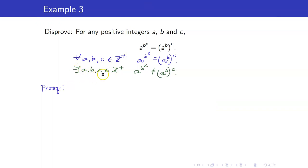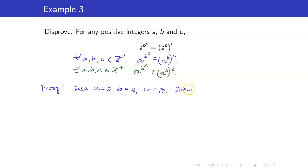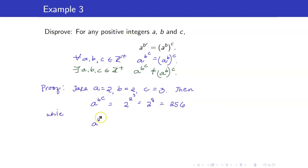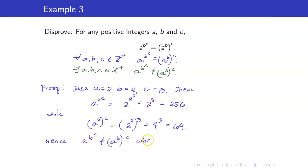For our proof, we can take a and b to be equal to 2, and c equal to 3. There are many other possible options. Then a^(b^c) is 2 raised to 2 raised to 3, which is 2 raised to 8, which is 256. While the expression on the right, (a^b)^c, is 2 squared raised to 3, which equals 4 cubed, which equals 64. So the two expressions are not equal for these values.